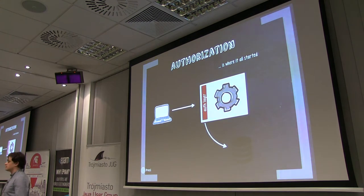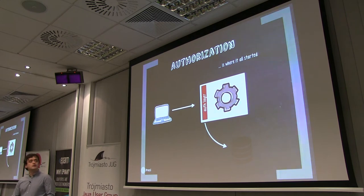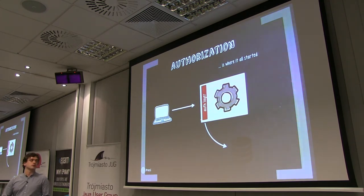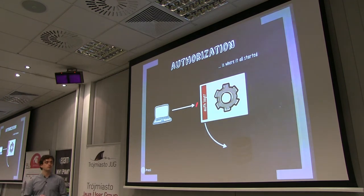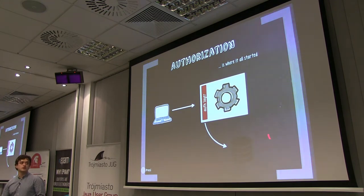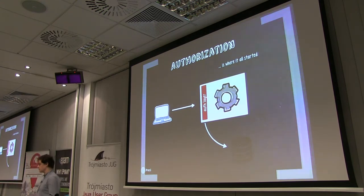In a simple use case, people built applications deployed on a single server and needed to authorize users. An authentication layer was put in front of the application to check user requests that contained credentials such as username and password. Those were validated against the database, and if valid, the user got access to the application. Simple as that.